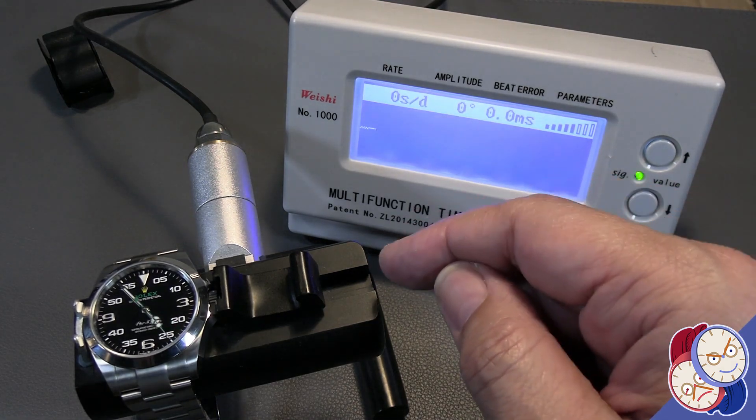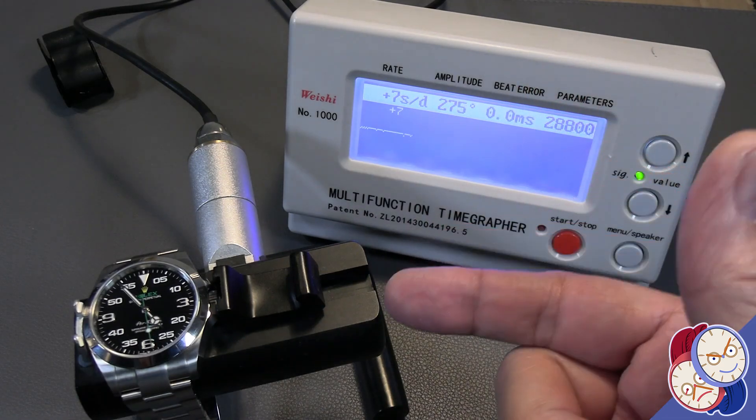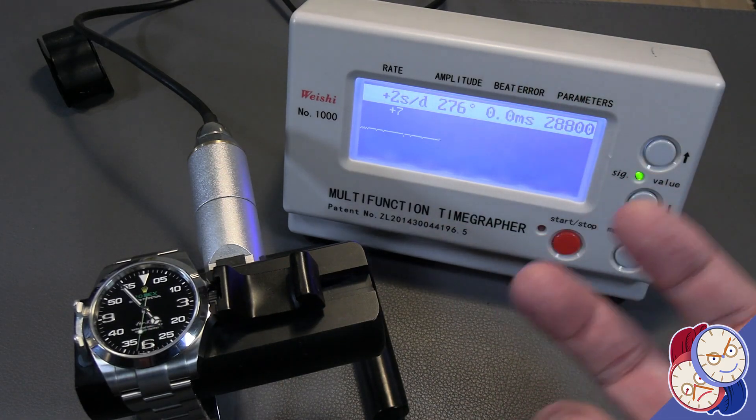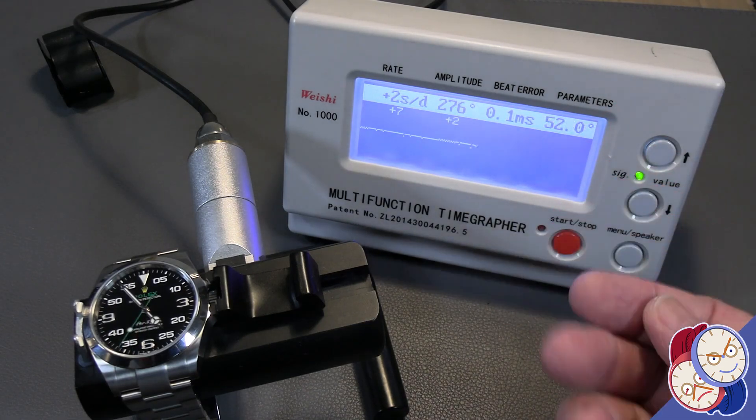Basically, the stand is a very sensitive microphone, and the device, by listening to the watch, knows what the various sounds it makes means and can give you this information in a visual display.